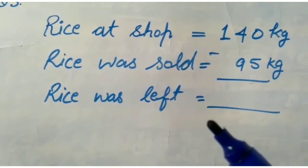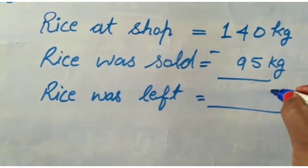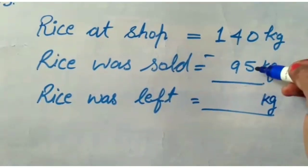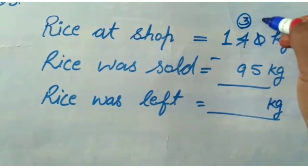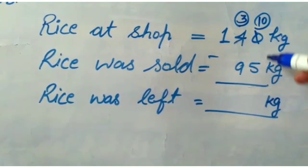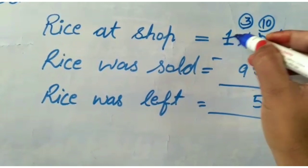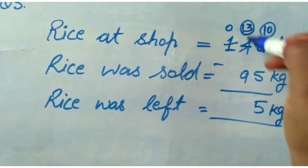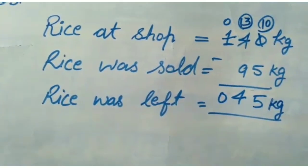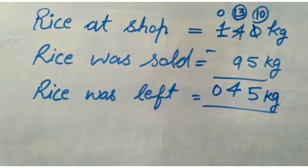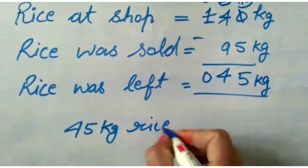यहाँ पर minus करेंगे। Given है kg, तो answer में भी kg लिखेंगे। 0 में से 5 minus नहीं होगा, carry लेंगे: 10 में से 5 = 5। 3 में से 9 minus नहीं होगा, carry लेंगे: 13 में से 9 = 4। So rice left = 45 kg.